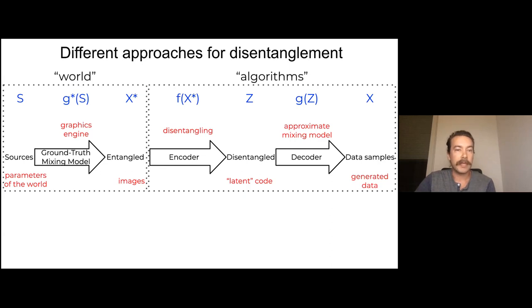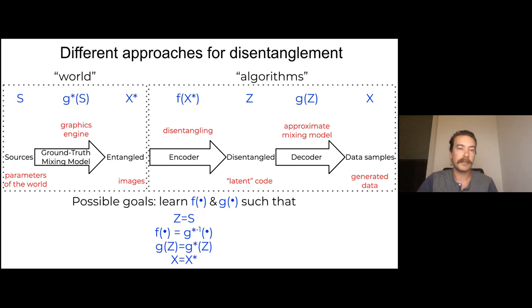So we want to learn something about this world process. One common next step is to use an encoder. So we want to recover sources from the mixed data and produce a disentangled code, which we'll call latent code. Many approaches also try to learn to generate new samples from the latent code. And so they learn to approximate the original ground truth generator and generate data samples.